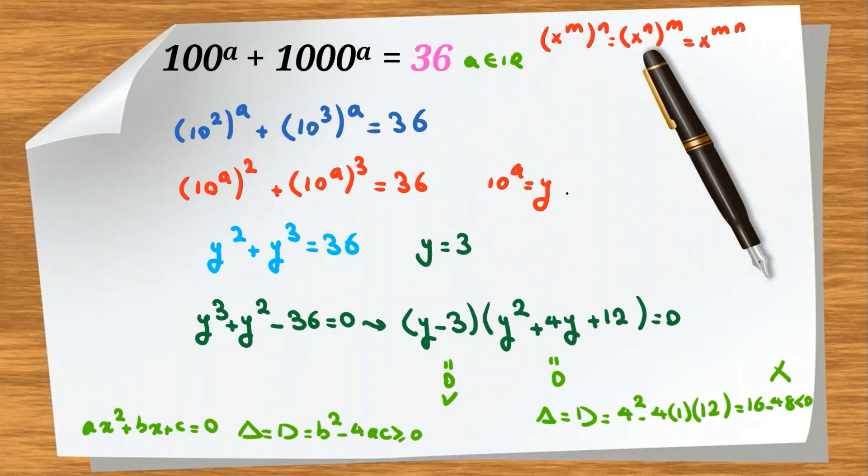Y equals 10 to the A. So we can say 10 to the A is 3. For this part, we should know logarithm, the definition of logarithm. Let me write: If we have b to the m equals a, then we can say by definition of logarithm, m equals log base b of a. So here we can conclude A equals log base 10 of 3. So it is our only real solution.